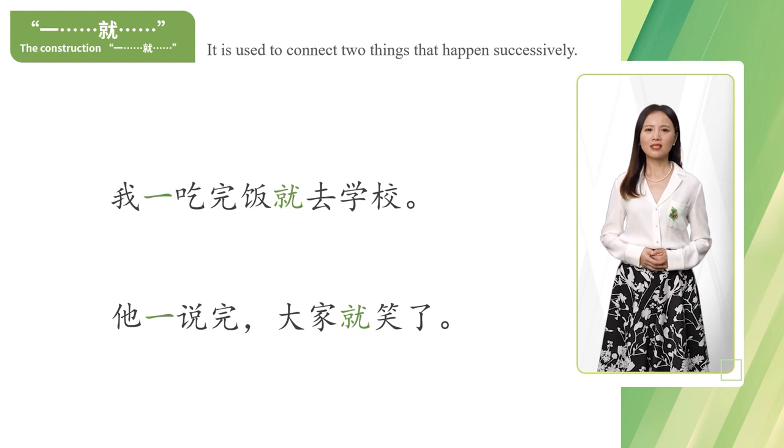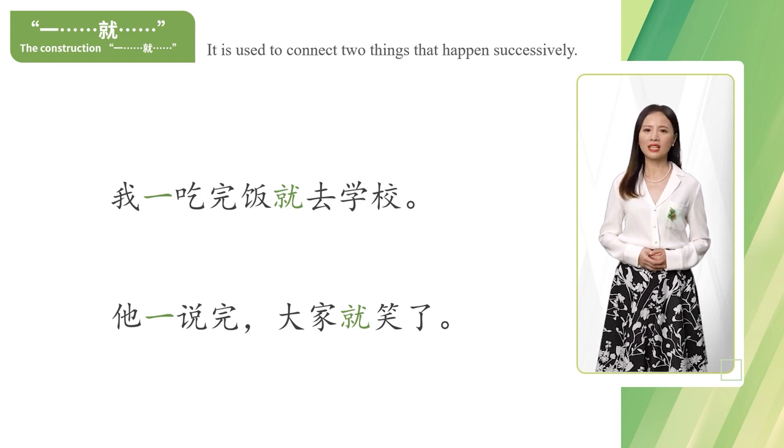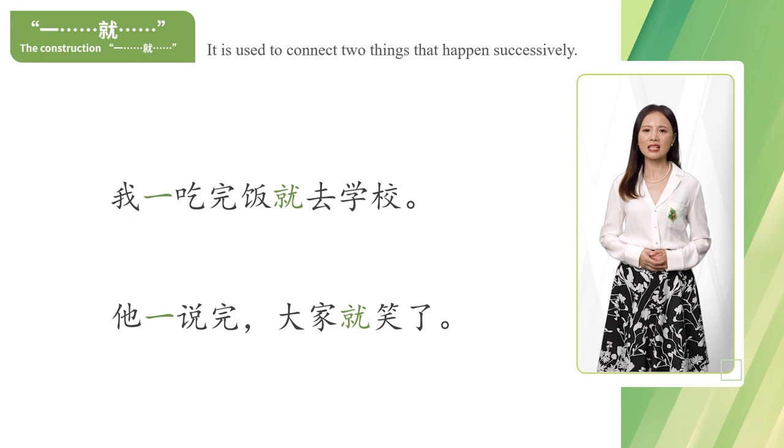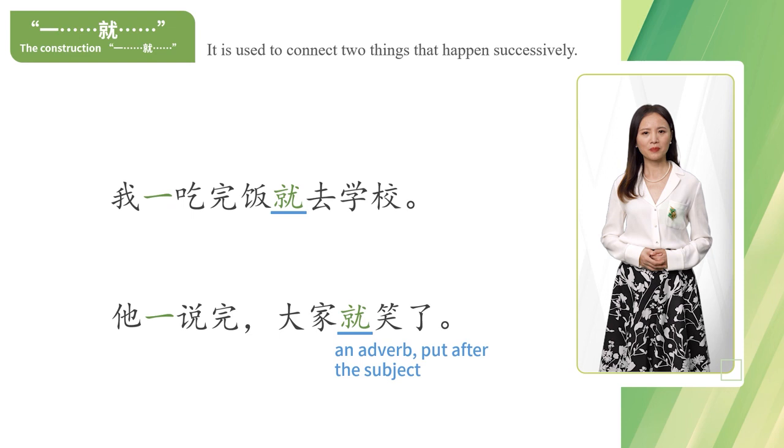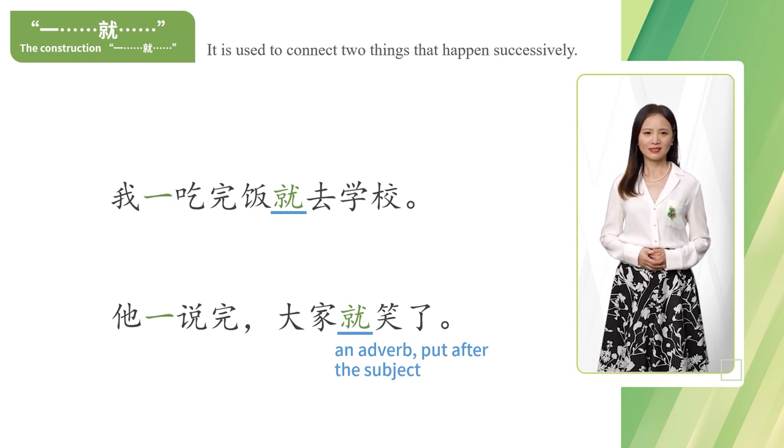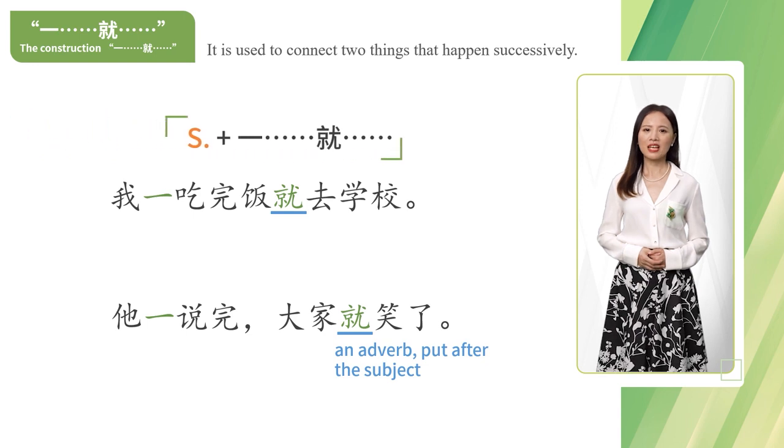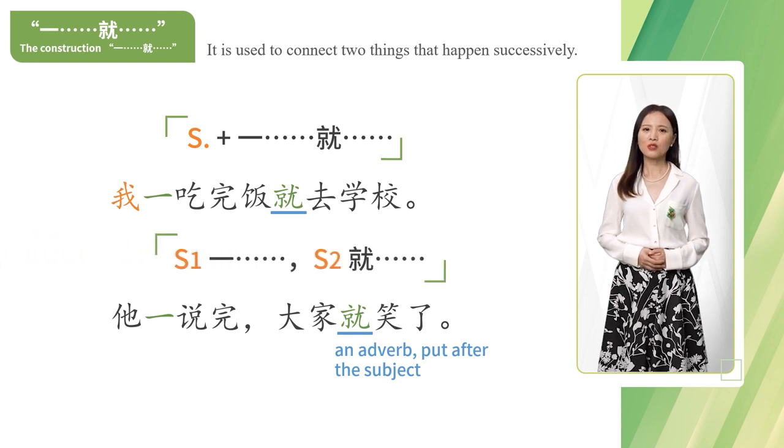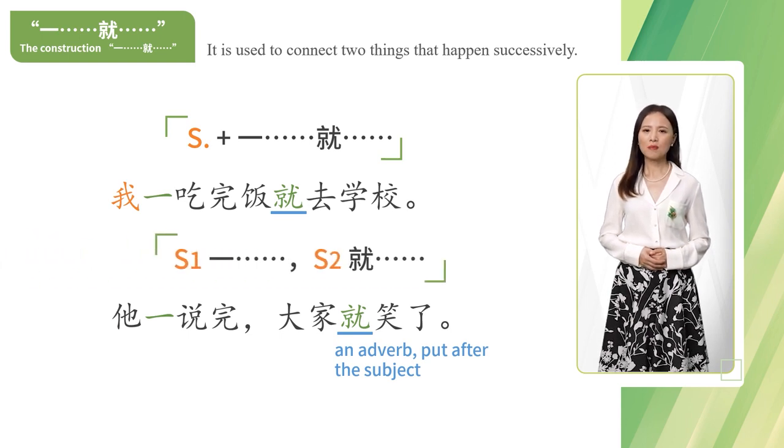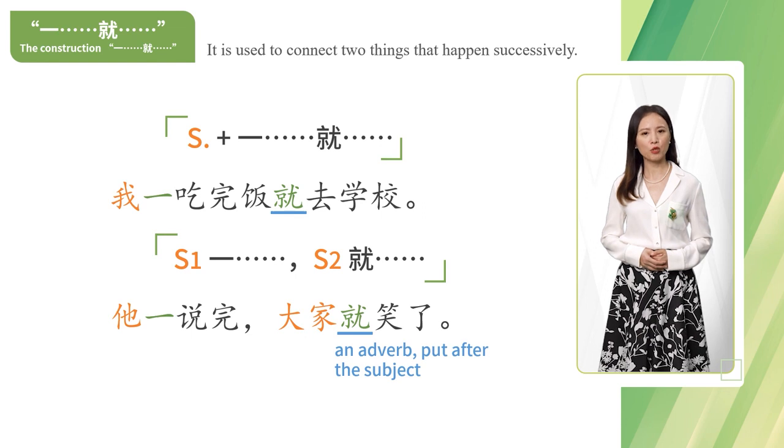一就 is used to connect two things that happen successively. 就 is an adverb put after the subject. If there is one subject, the subject must come before 一. If there are two subjects, subject one must come before 一 and subject two must come before the adverb 就.